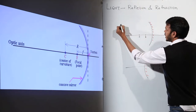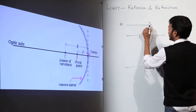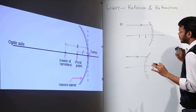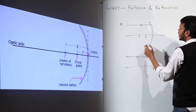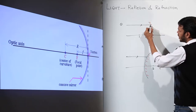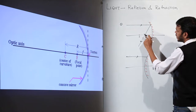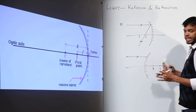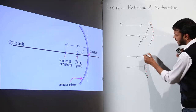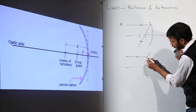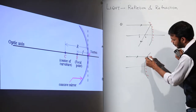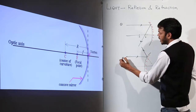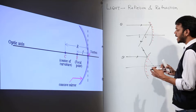Ray number one is the ray coming parallel to the principal axis. This ray will always pass through the focus. In a concave mirror it reflects and passes through focus. In a convex mirror it reflects such that the ray appears to be coming from the focus. So the ray parallel to the principal axis will always pass through focus — that is ray number one.